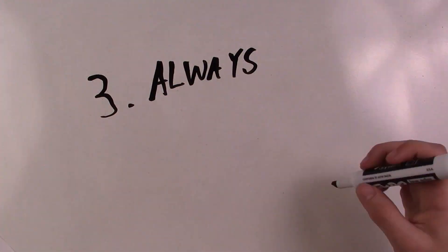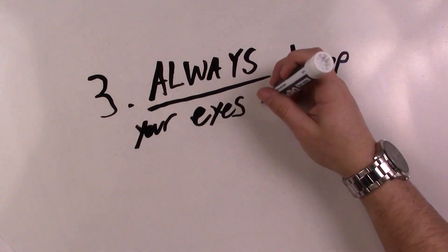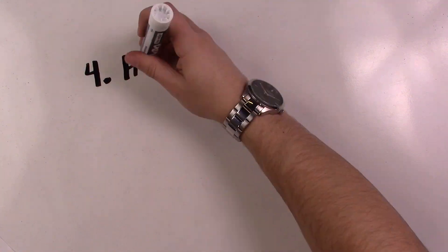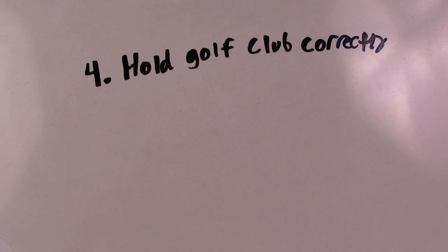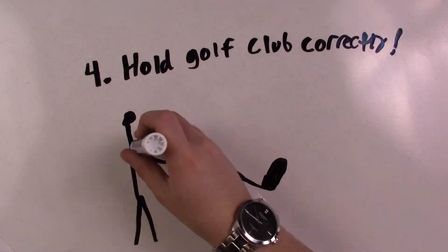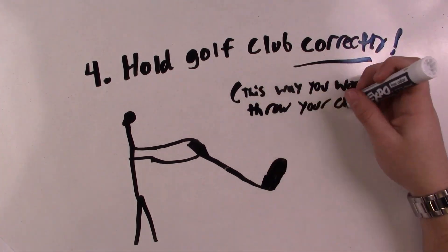Number three: Always keep your eyes on the ball. This will help you in teeing off. Number four: When holding the golf club, make sure you have a proper grip on the club. This way you won't end up throwing your club.